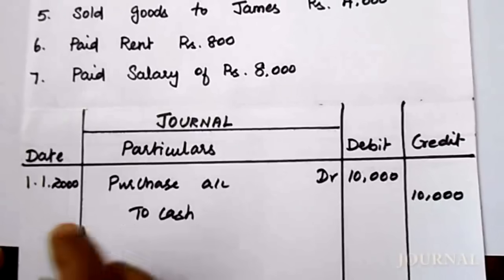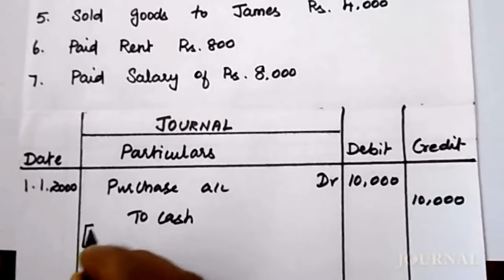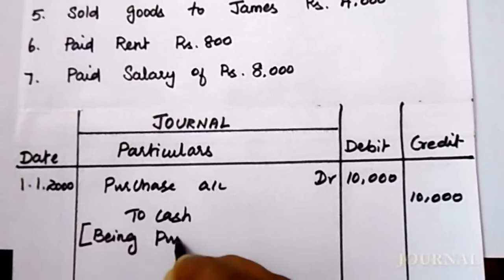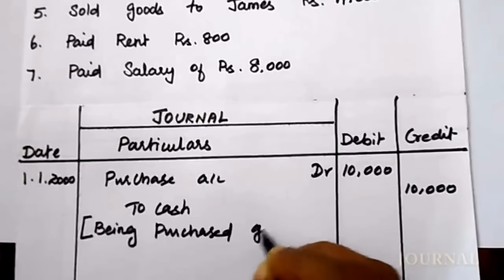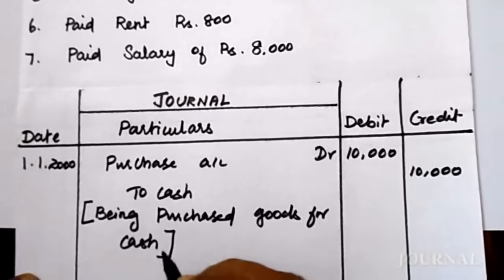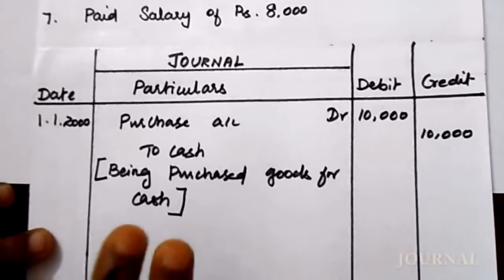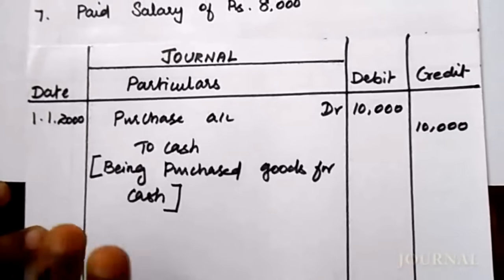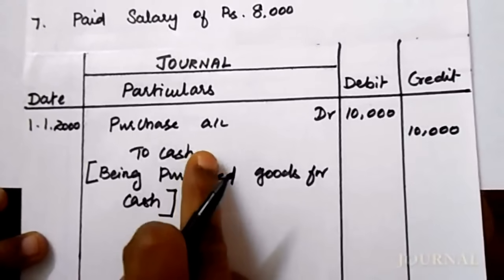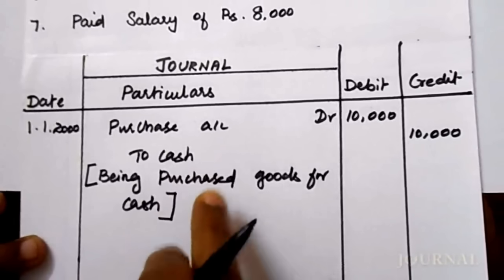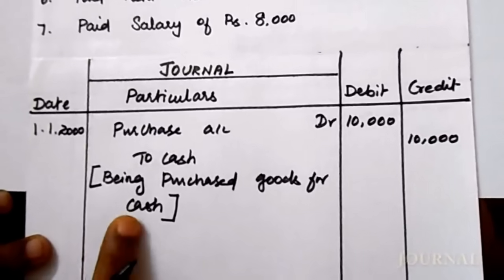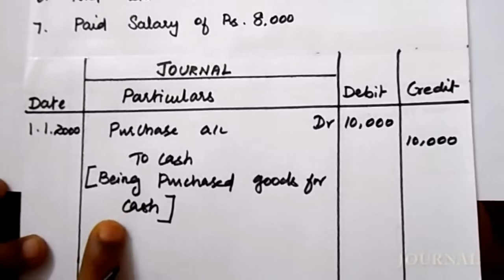For each and every journal entry, you have to write narration. Narration should start with 'Being.' Being — purchased goods for cash. Narration is nothing but details about the transaction. Every journal entry is accompanied by a narration which explains the details of the transaction.